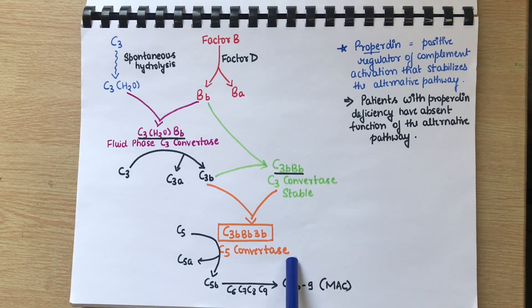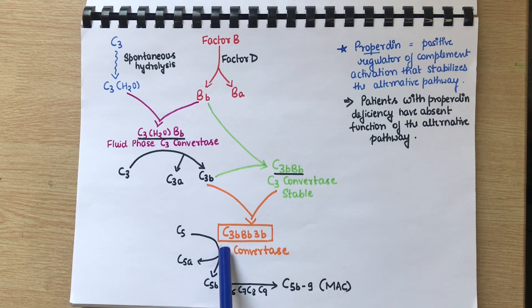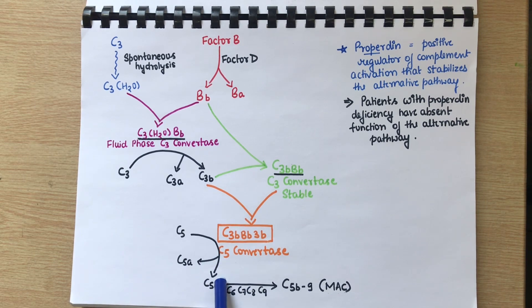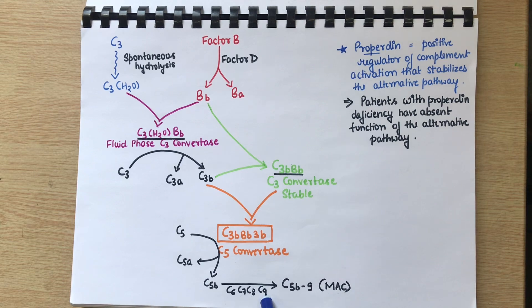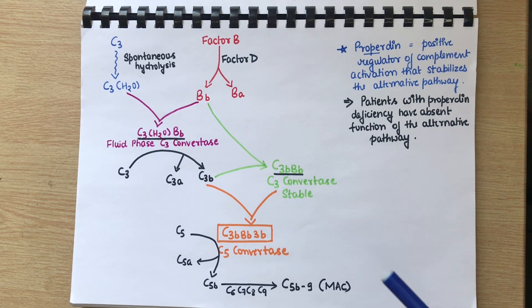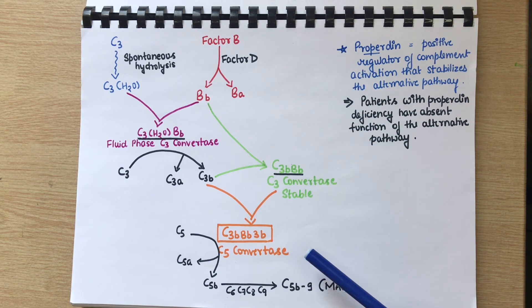As the name suggests, C5 convertase will be cleaving C5. C5 will be cleaved into C5a and C5b. Now this C5b will combine with C6, C7, C8, and C9, forming C5b-6-7-8-9. This is known as MAC, which is the membrane attack complex. The membrane attack complex forms pores in the target cell membrane, and hence all the content will be leaked out, leading to cell lysis.